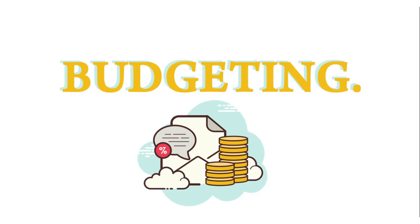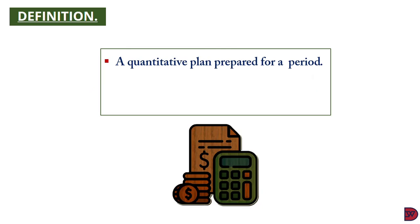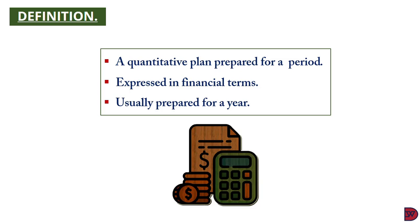Budgeting: every business sets objectives which become a benchmark for their operations to achieve. They will have to plan to meet targets such as revenue, expenditure, and capital machinery. It will be nearly impossible to achieve objectives without a plan. A budget can serve this purpose. A budget is a spending plan based on income and expenditure, expressed in quantitative terms — financial figures are assigned to the plan, making it easy to implement and measure. Budgets are usually prepared for a year at the beginning of it, looking forward into the future.